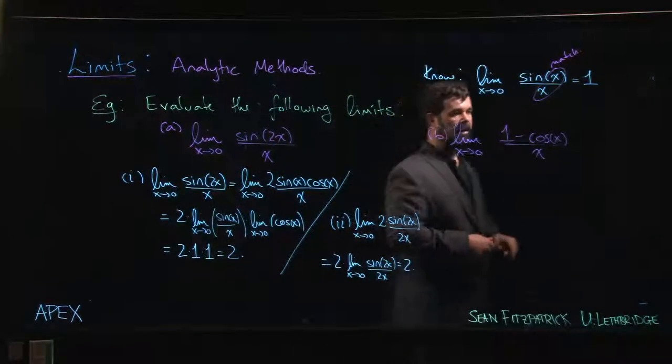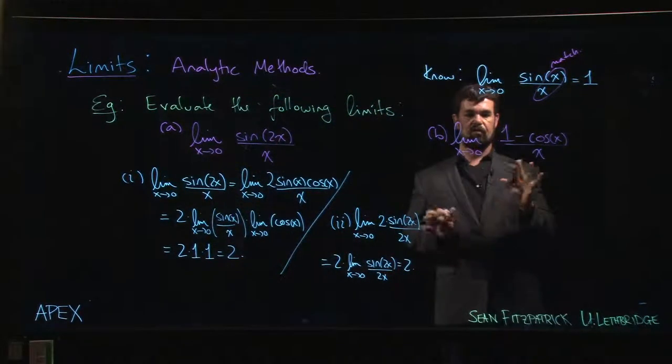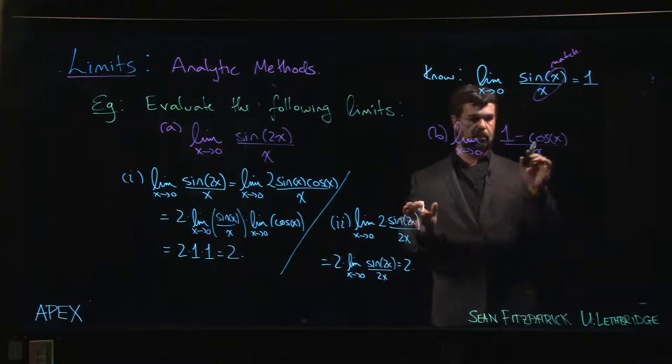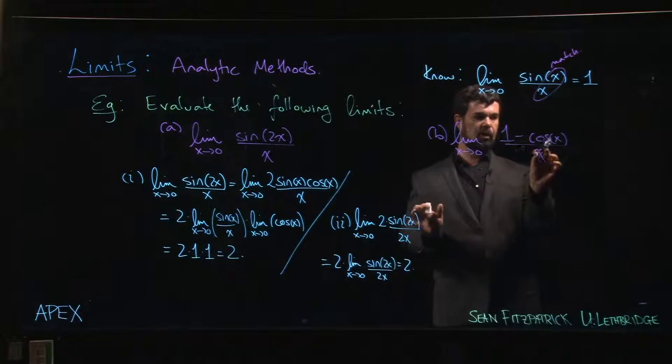Okay, how about this one here? This is actually a tricky limit. If you try to do it by direct substitution, you are going to get 0 over 0. Cos of 0 is 1, 1 minus 1 is 0, x is going to 0, so it's a 0 over 0 limit.